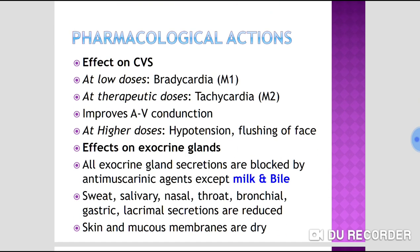Regarding cardiovascular effects: at low doses, atropine causes bradycardia by stimulating M1 receptors present pre-synaptically, which are auto-inhibitory receptors. At therapeutic doses, it causes tachycardia by acting on M2 receptors present post-synaptically.